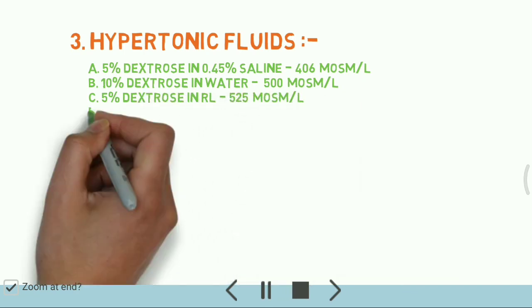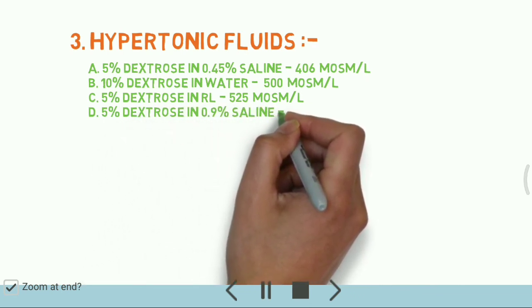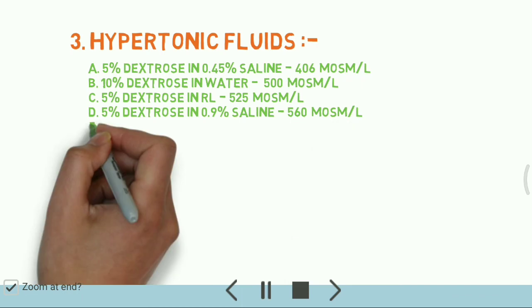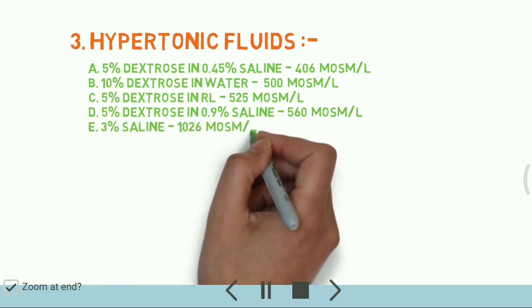5% dextrose in 0.9% saline: 560 milliosmoles per liter. And for 3% normal saline: 1026 milliosmoles per liter.